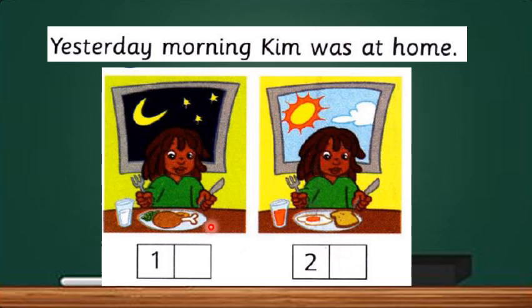As you can see here, both of the pictures show that Kim was having the meal. However, they have the meal at different time. In picture A, look at the window. The outside of the house is dark. So, Kim was having her dinner. And in picture B, the sky is bright. At this time, Kim was having her breakfast. So, can you guess which picture is the correct answer? Good, the answer is picture B.